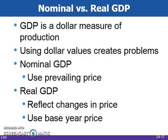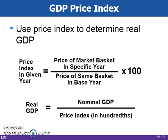In order to calculate real GDP, a base year must be selected and then the current year's prices adjusted accordingly. This is the formula used to calculate real GDP. We use a price index that is equal to the price of a collection of goods and services in the specific year divided by the price for the same goods and services in a base year, multiplied by 100. Nominal GDP is then divided by the price index in hundredths to determine the real GDP.